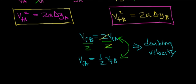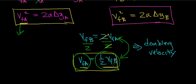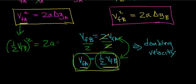What I'm going to do with this is make a substitution into equation one. In place of the final velocity of object a, I'll substitute ½·v_final_b, because I know that v_final_a = ½·v_final_b. So I get: (½·v_final_b)² = 2g·Δy_a.